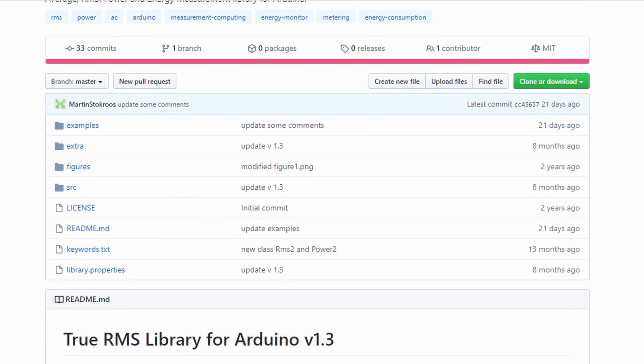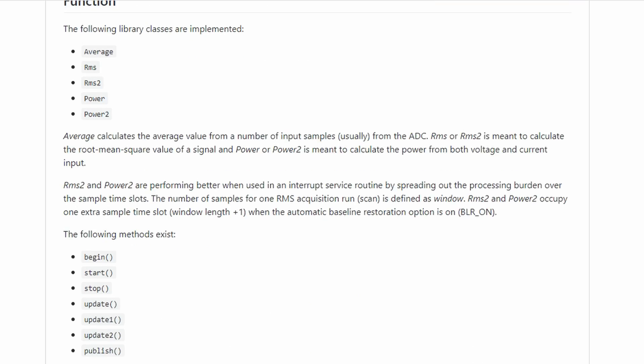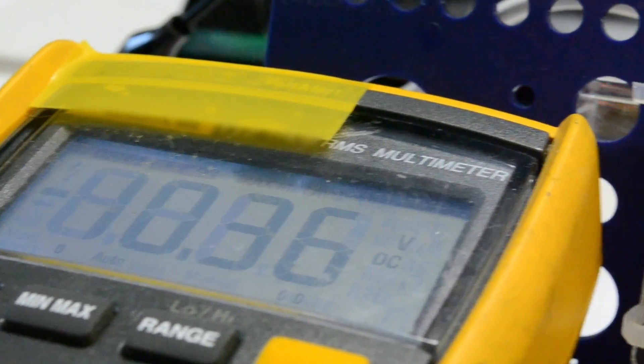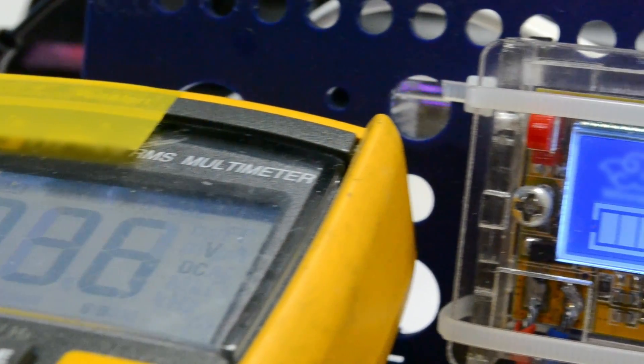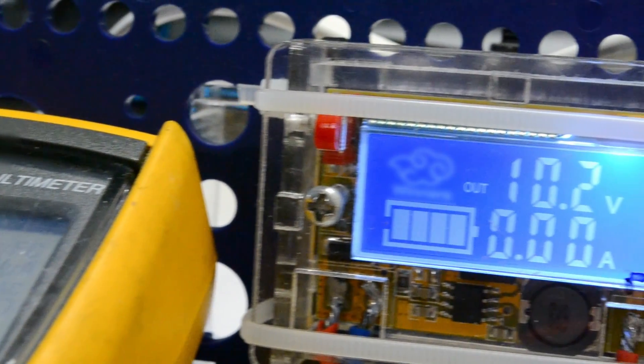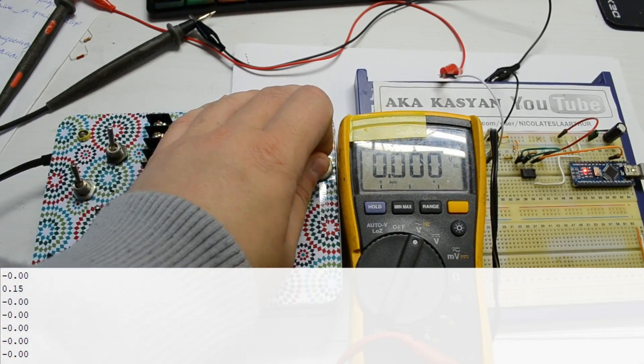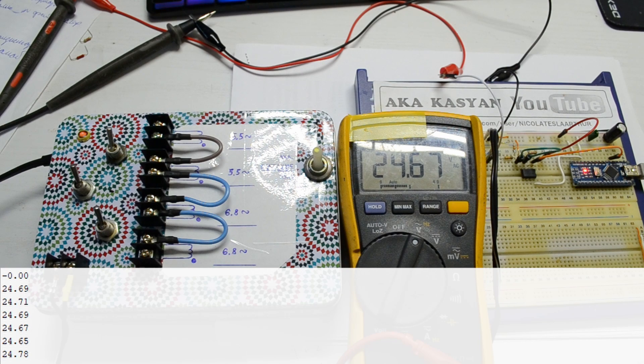Well, since we are using the Arduino platform, we will use a code from the library to measure the RMS value. We have already done everything with hardware. In the description, you will find links to all sketches and circuits. Let's check. It's okay.